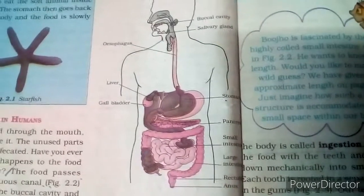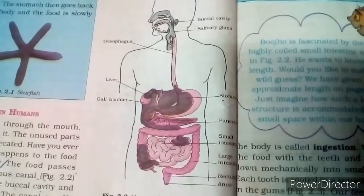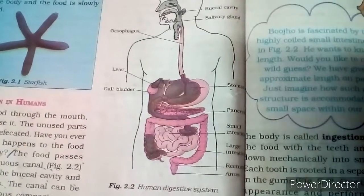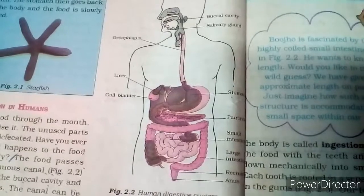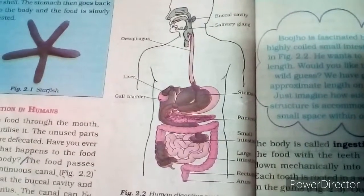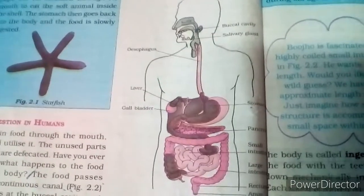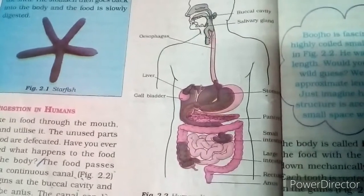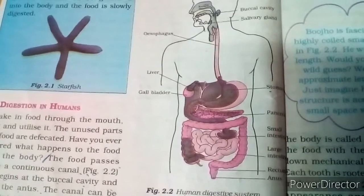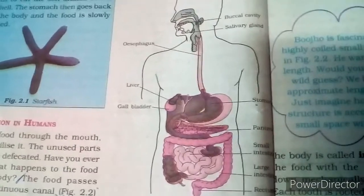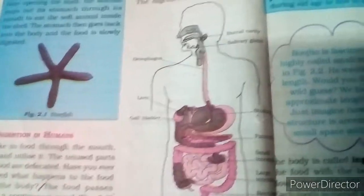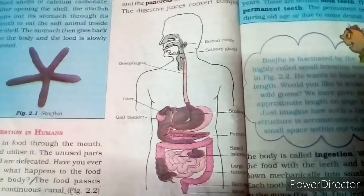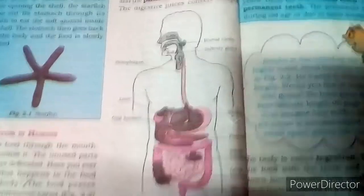The canal continues through the small intestine, large intestine, rectum, and anus. These parts together form the alimentary canal. The inner walls of the stomach, small intestine, and associated glands such as salivary glands, the liver, and the pancreas secrete digestive juices. The digestive juices convert complex food substances into simpler ones. The digestive tract and associated glands together constitute the digestive system.